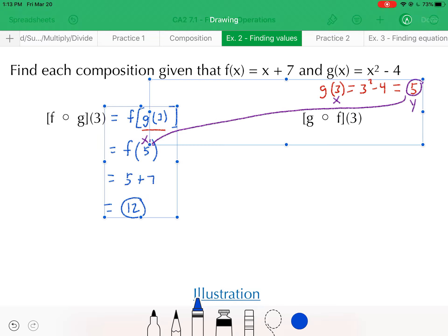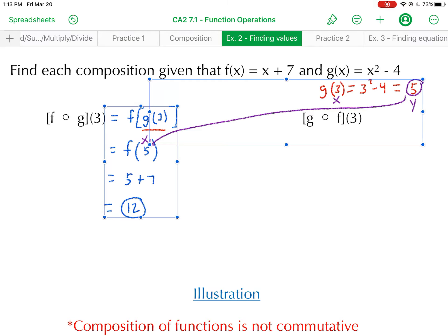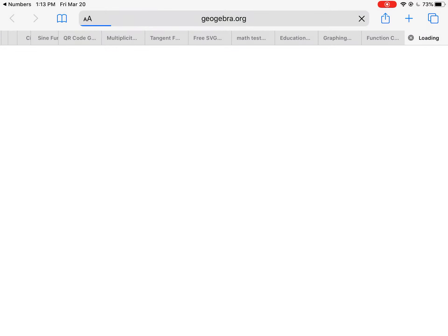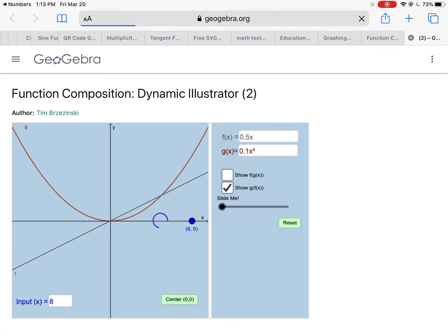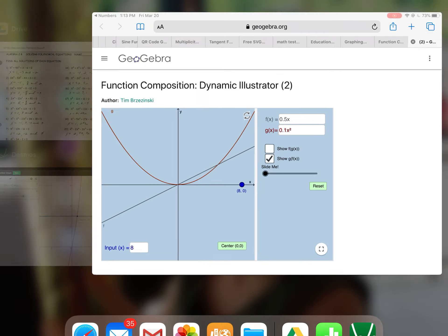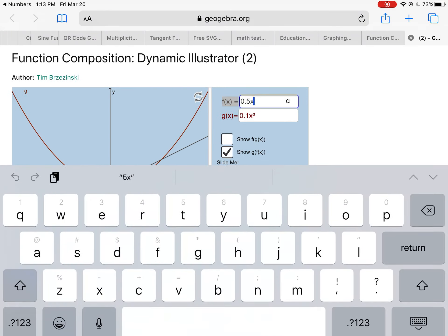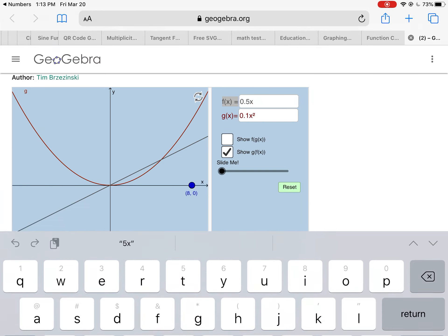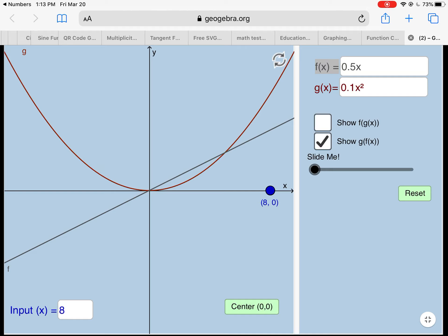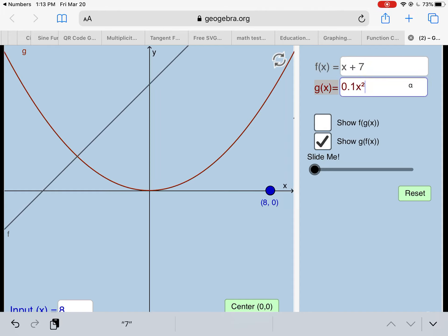Before we get to the second example, let's click on this illustration here so you can better see what we're doing. Let me go back, actually. Our functions were x plus 7 and x squared minus 4. So I'm going to type in x plus 7 for f and down here x squared minus 4 for g.